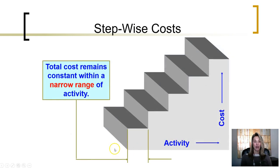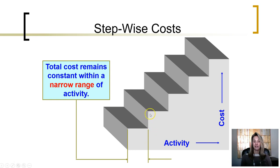Some costs are stepwise — they stay constant within a relevant range or narrow level of activity, but once you leave that level of activity, the cost will change. For example, rent expense: previously we discussed rent as a fixed cost, and as long as we stay within a certain level of production, the rent cost will remain the same. However, at some point, if we continue to produce more and more, we're going to need to rent another facility, so our rent overall will increase, causing us to step up to a higher level of cost.